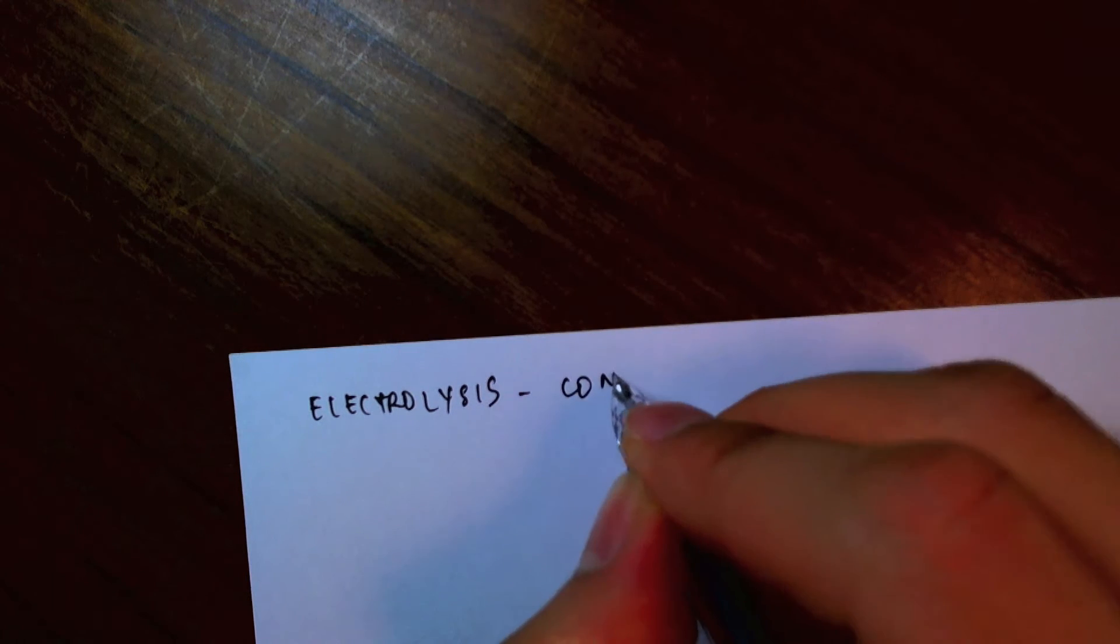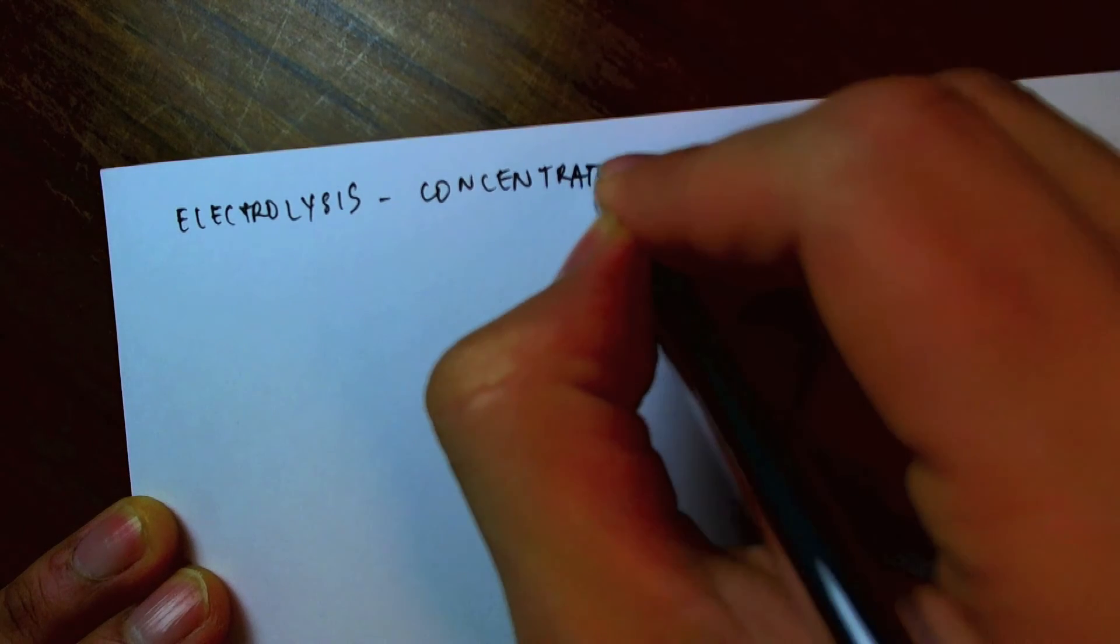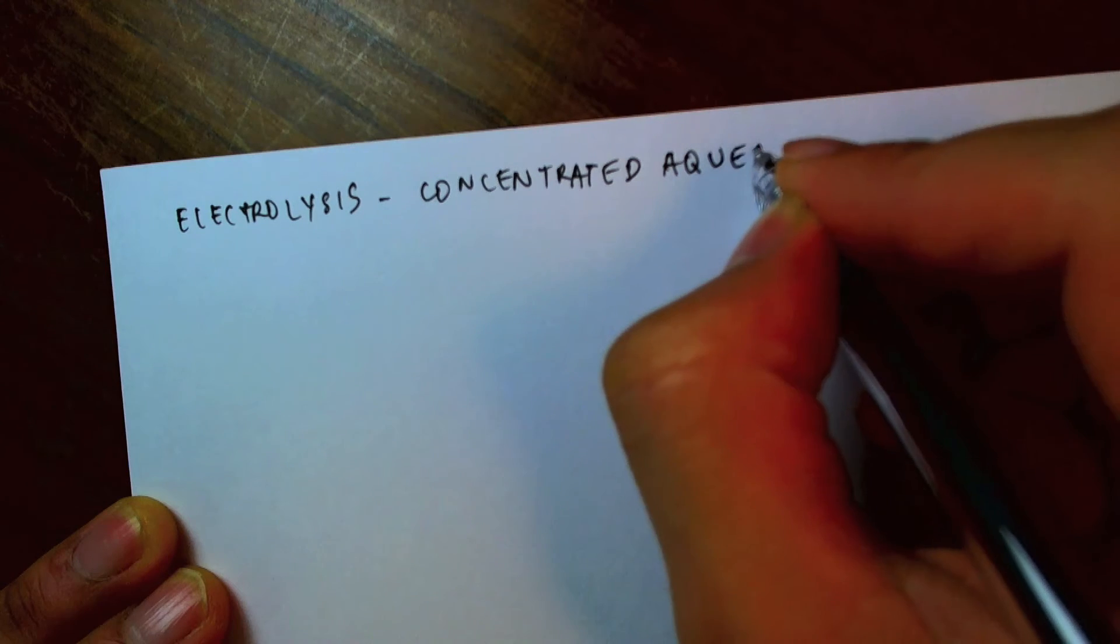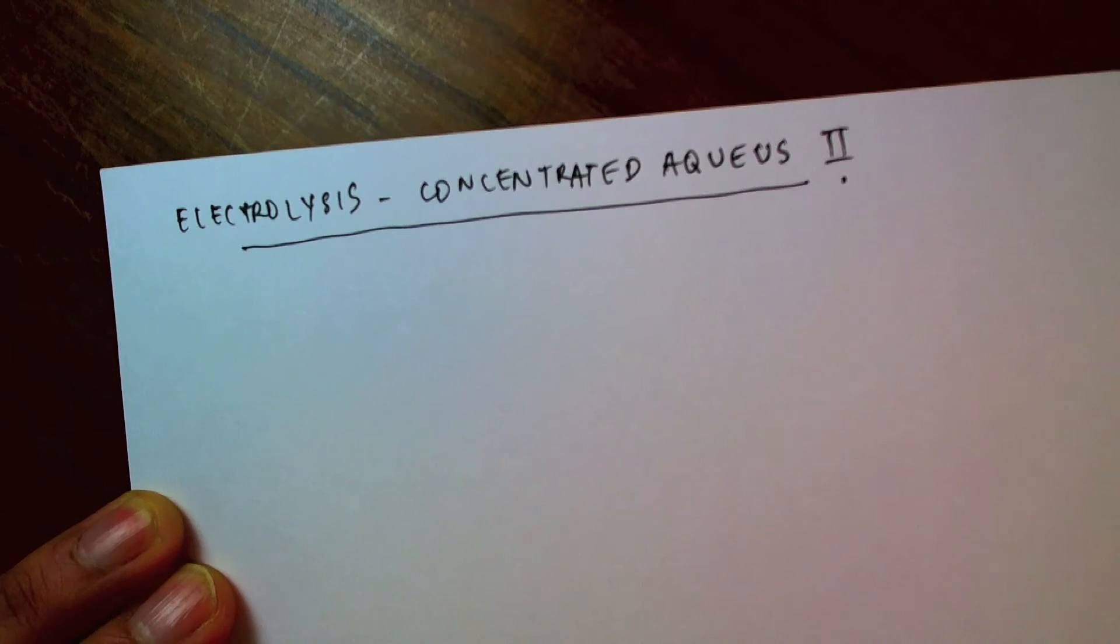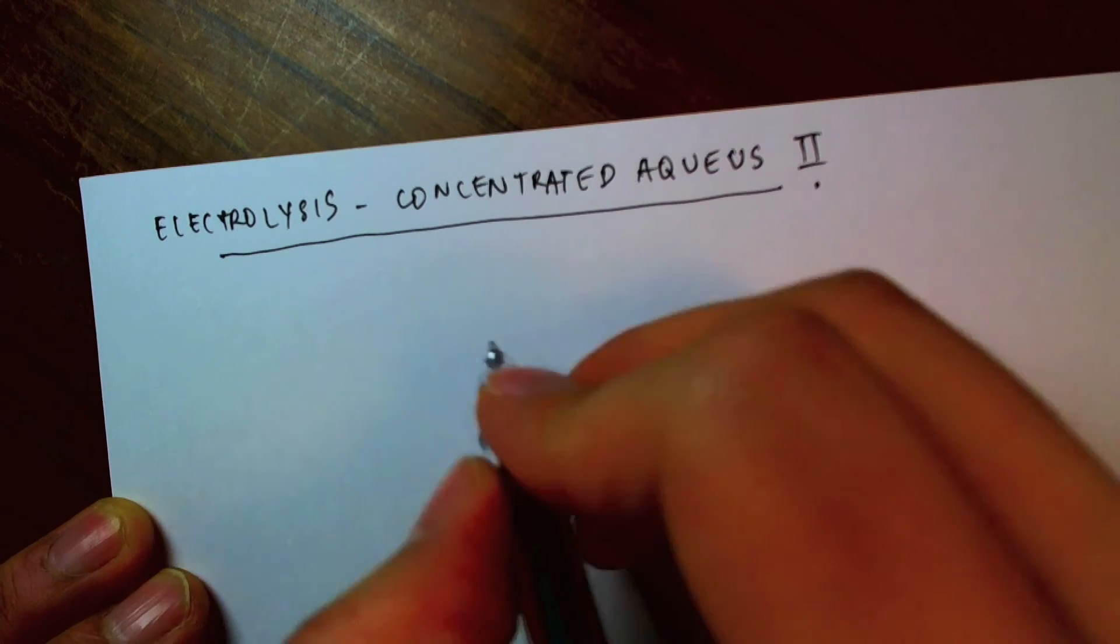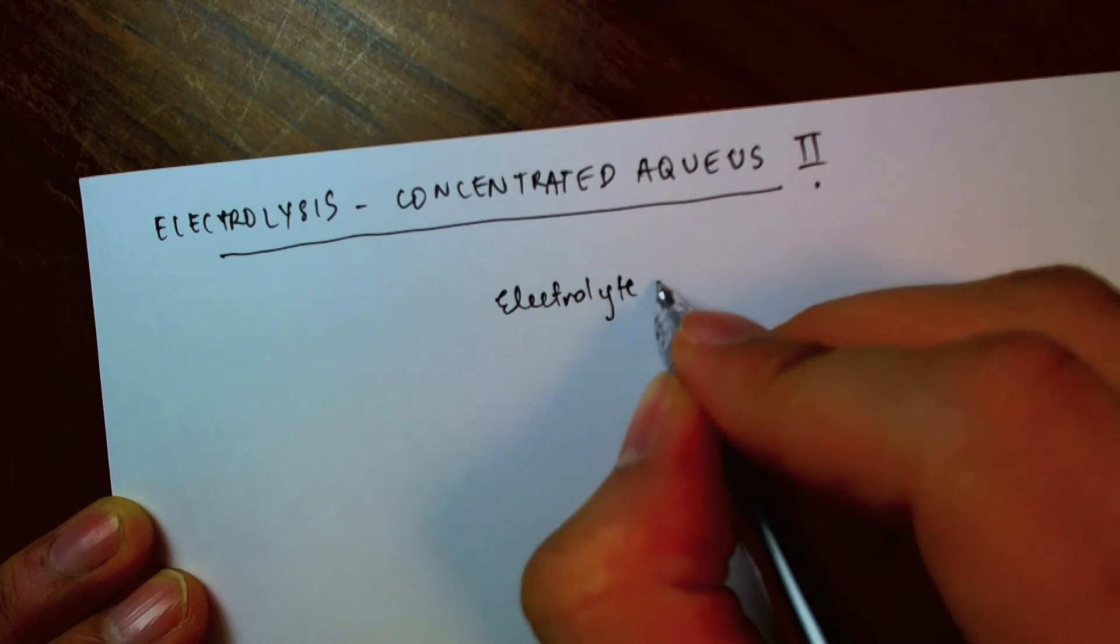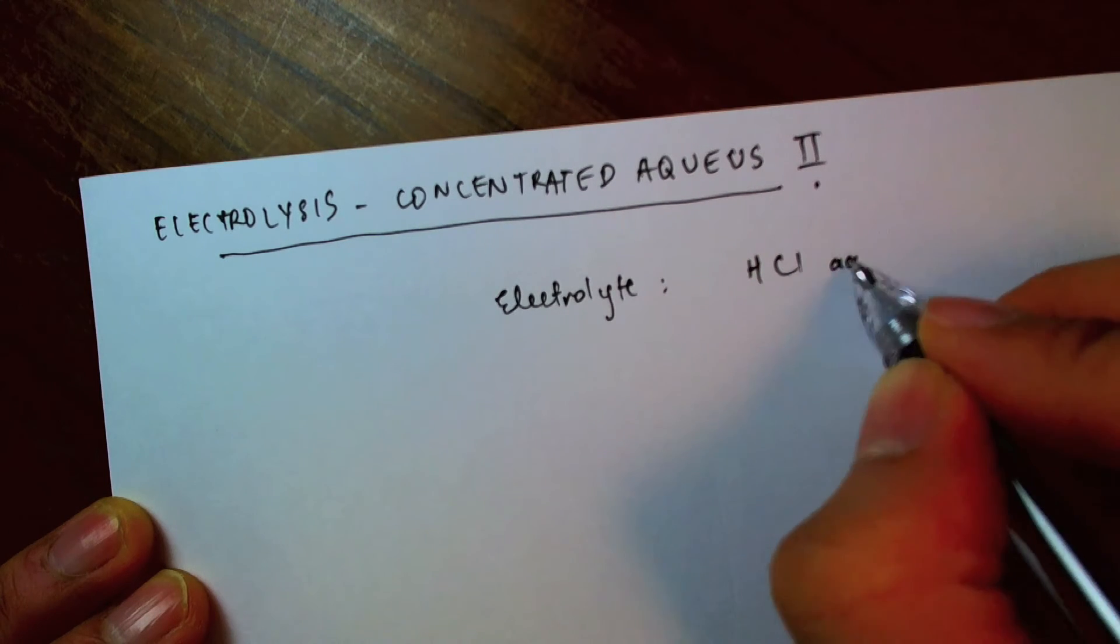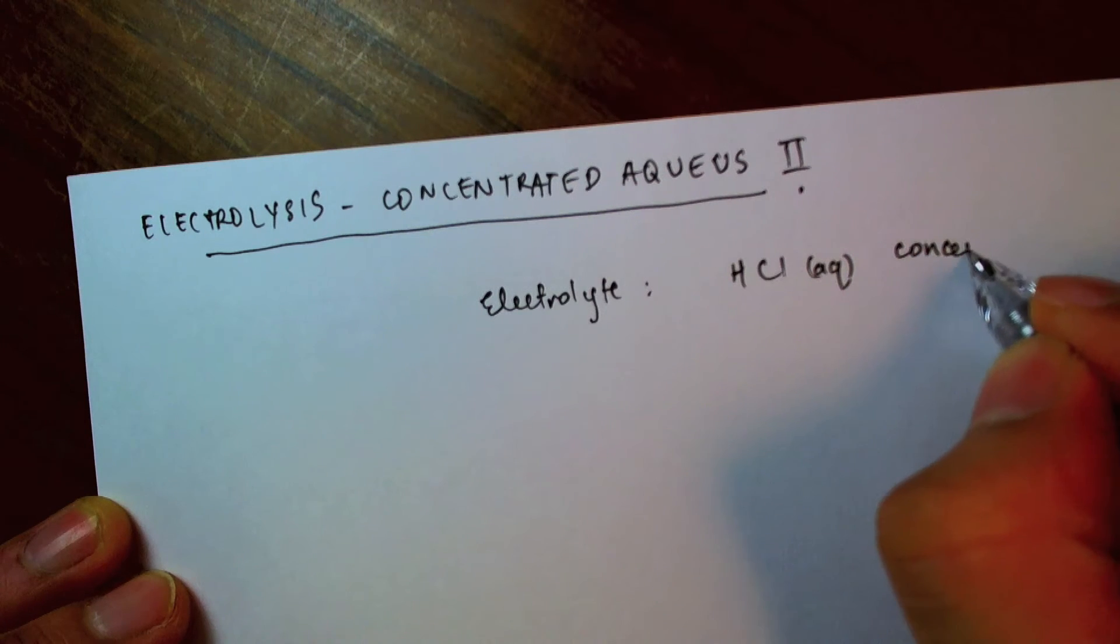So this is concentrated aqueous part two. So what am I trying to electrolyze here? Let's name my electrolyte as hydrochloric acid or hydrogen chloride aqueous concentrated.